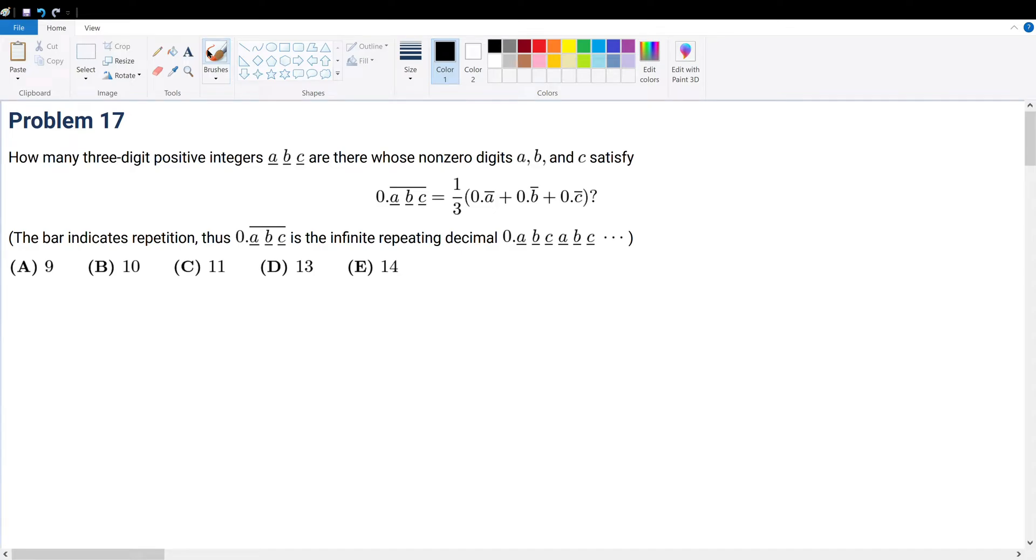Problem 17. How many three-digit positive integers ABC are there whose non-zero digits satisfy the following expression?